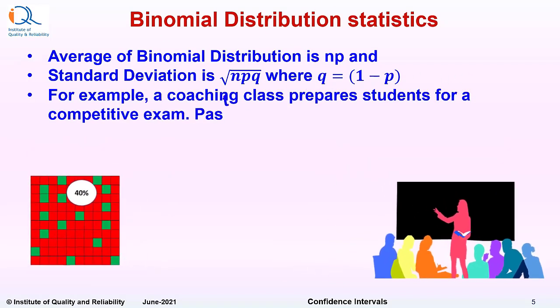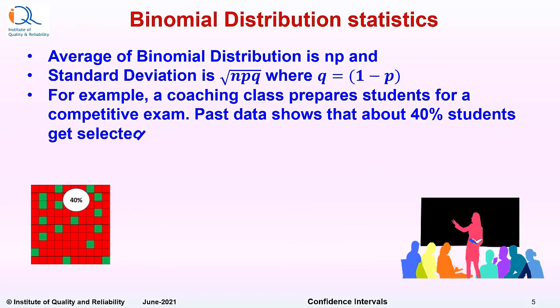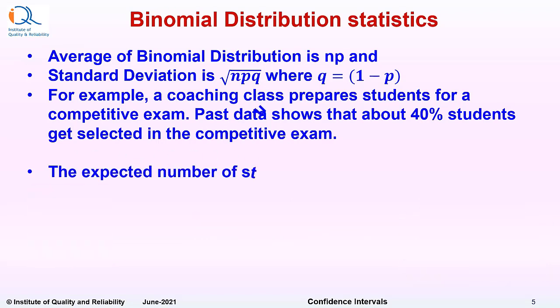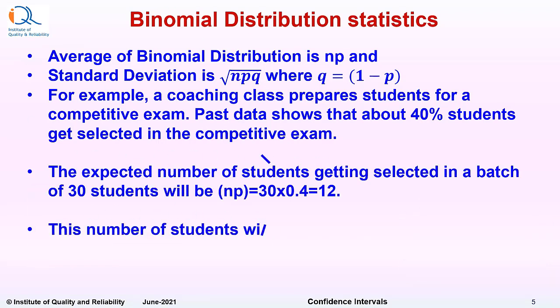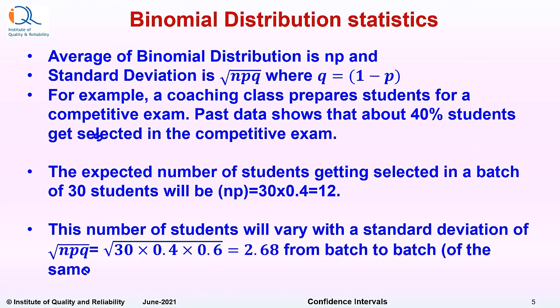The expected number of students getting selected in a batch of 30 students will be np equals 30 into 0.4, that is equal to 12. This number of students will vary with a standard deviation of square root of npq, which is square root of 30 into 0.4 into 0.6, which is 2.68 from batch to batch of the same size, that is batch size of 30.